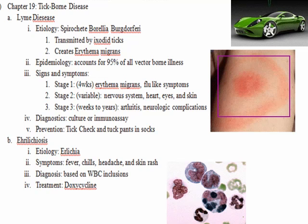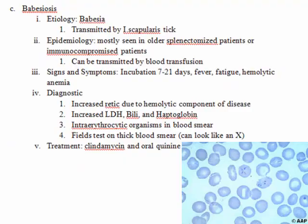Ehrlichiosis is an intra-WBC inclusion — you can see dark inclusions in the WBCs on the slide, which you should also know from hematology. Babesiosis is transmitted by the Ixodes scapularis tick. It can cause flu-like symptoms and hemolytic anemia. Know that babesiosis is an intra-erythrocytic organism with a little cross pattern visible in the cells.